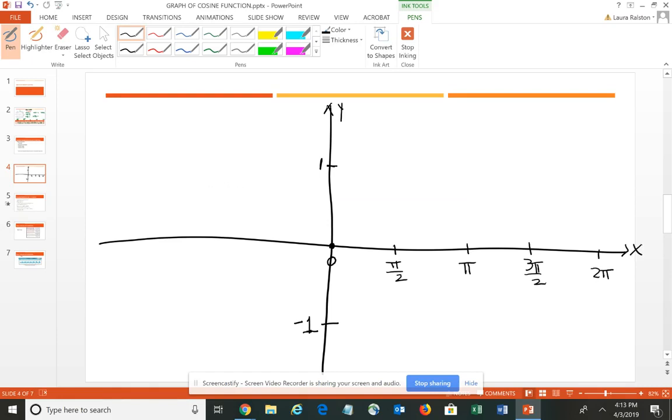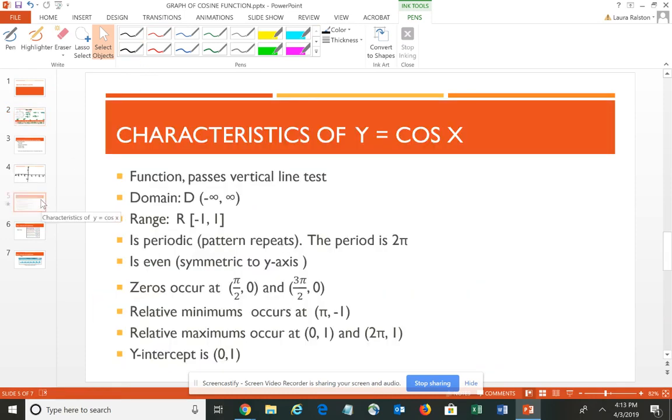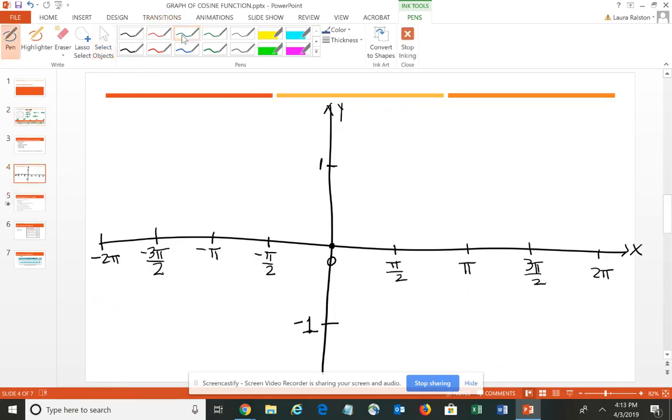Now here we can also rotate negatively, so I would have negative pi halves, negative pi, negative 3 pi halves, and negative 2 pi. So if we go back to the table and we start looking at our ordered pairs, when X is 0, Y is 1. So I have the ordered pair 0, 1.